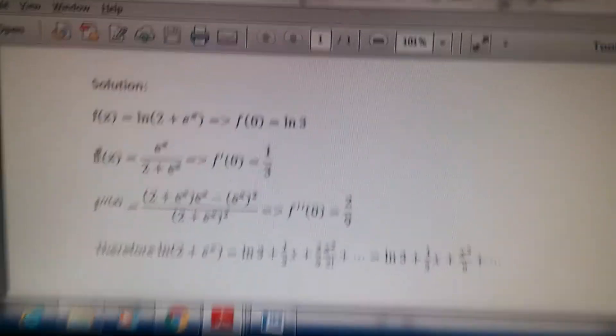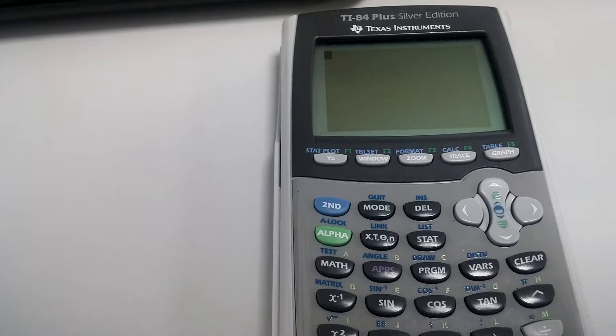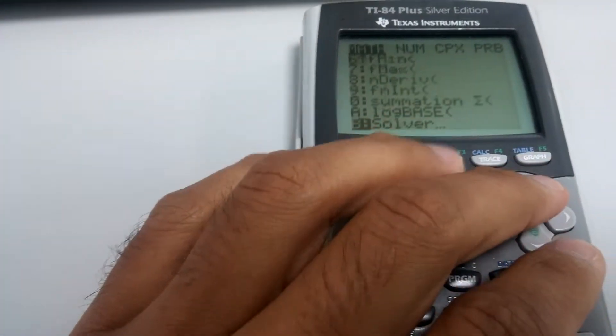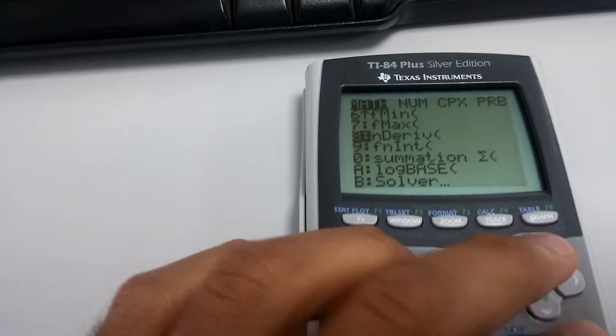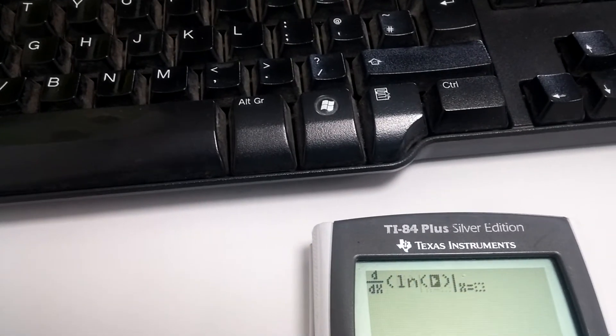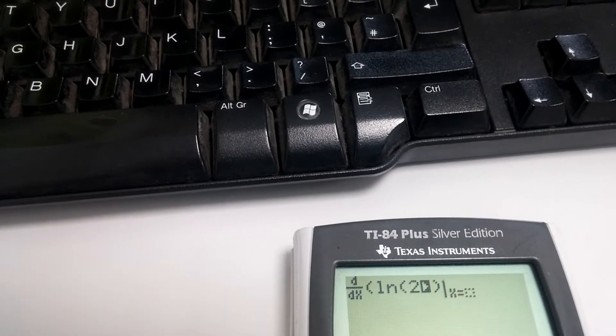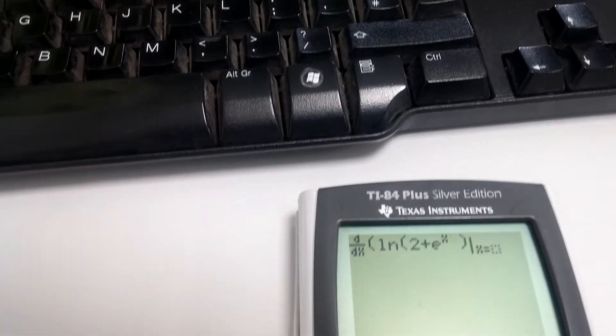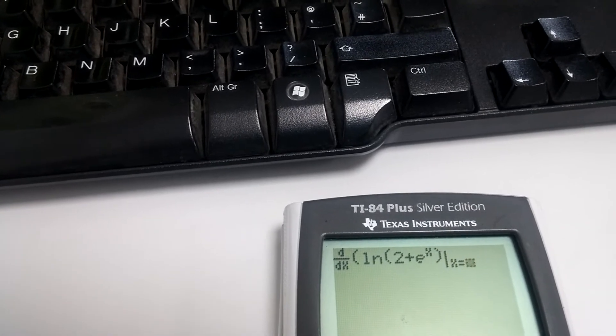So what you can do is you can simply go to math, go up, go to n-derivative, and you can check this. So quite simply just put in the function that we have, which is f of x, the natural log of 2 plus e to the x,